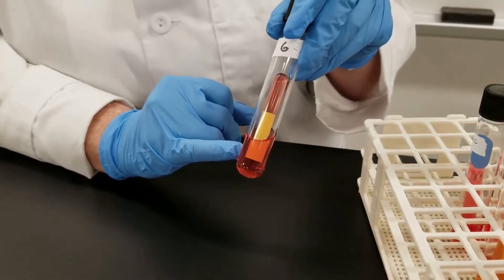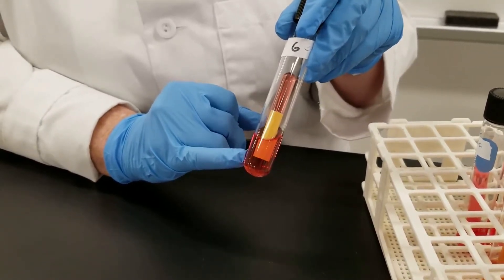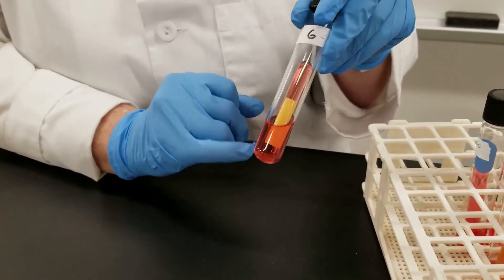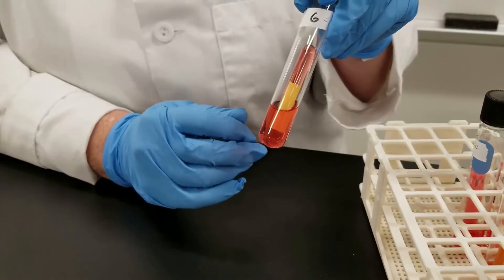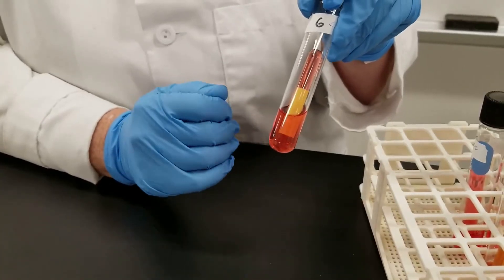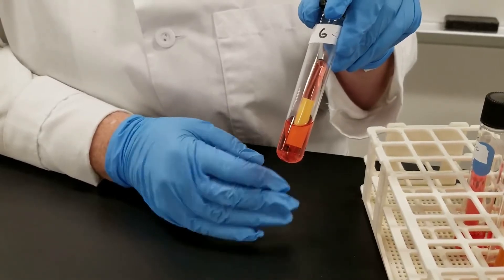This has the phenol red pH indicator added to it. So at neutral pH, it has this kind of orange-red color. Some organisms, as they break down the sugars, the byproduct is going to be acid, and that's where the pH indicator plays a role.